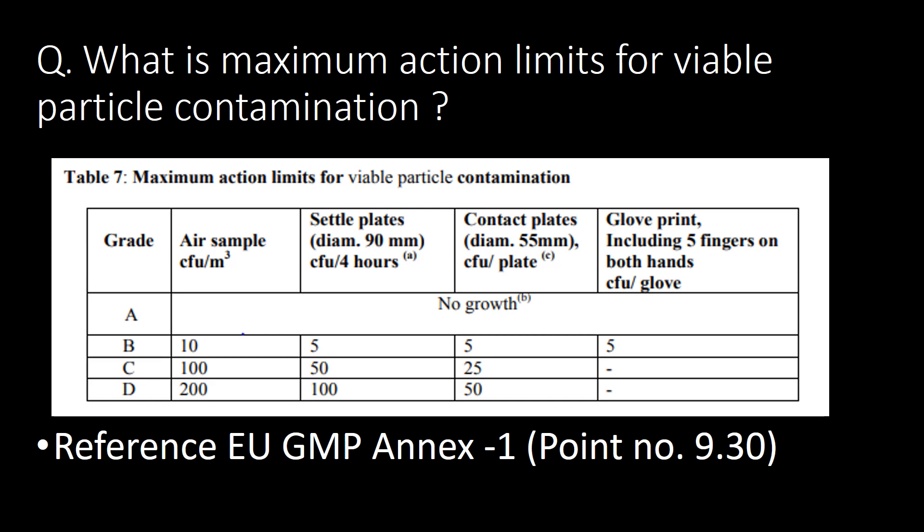What are the maximum action limits for viable particle contamination? You can refer to the table below for maximum action limits for viable particle contamination in Grade A, Grade B, Grade C and Grade D. Reference: EU GMP Annex 1, Point No. 9.30.